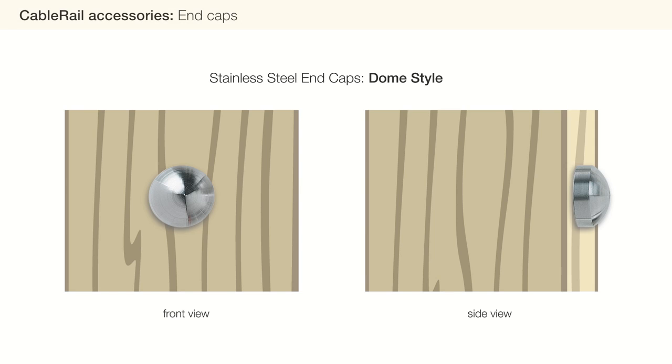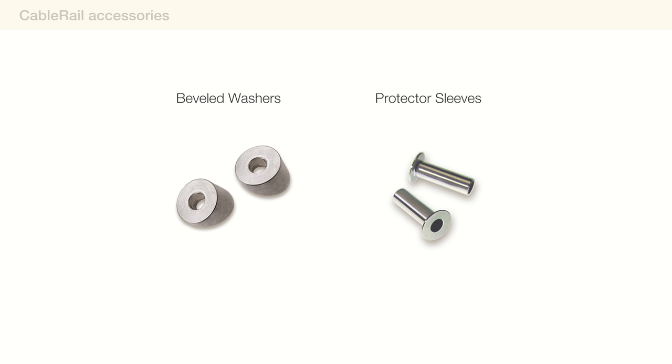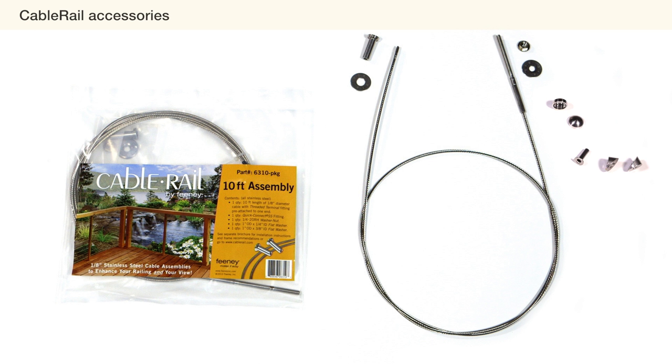In this video, we are using dome-style stainless steel end caps to cover, protect, and provide a finished look to the assemblies. End caps are available in other styles and are sold separately. We will also need beveled washers for the threaded terminal post and protector sleeves for the quick connect post. Make sure you have all your cable rail assemblies and components before you begin installation.